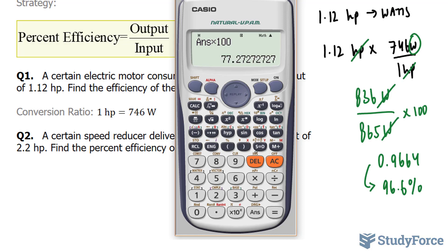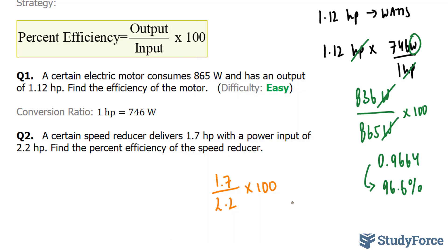And that gives us 77.27. Reducing this down to two significant figures, we have 77%. So the percent efficiency of the speed reducer is 77%.